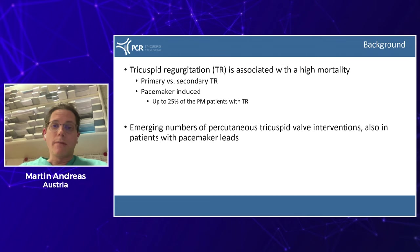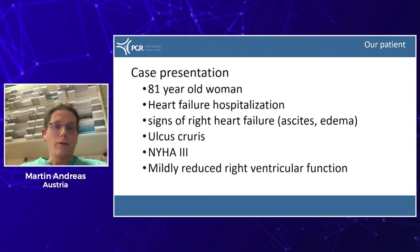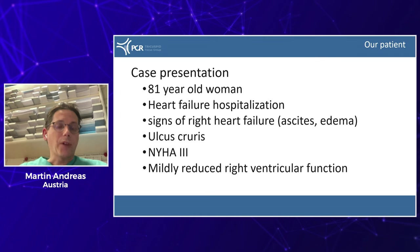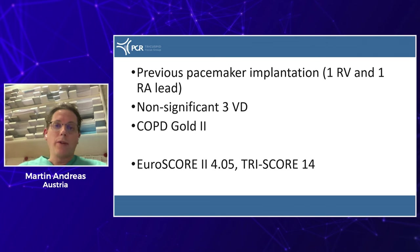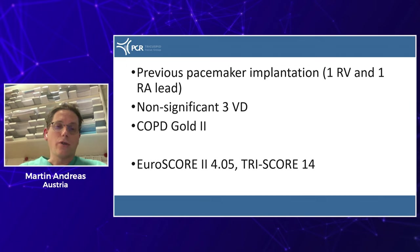There are emerging numbers of percutaneous tricuspid valve interventions in patients with pacemakers. Our patient is an 81-year-old woman hospitalized for heart failure with signs of right heart failure including ascites and edema. She was in NYHA class 3 with mildly reduced right ventricular function. She had a previous pacemaker with one lead in the right ventricle and one in the right atrium, non-significant three-vessel disease, COPD GOLD 2, EuroSCORE 2 of 4.05, and TRI-score of 14.